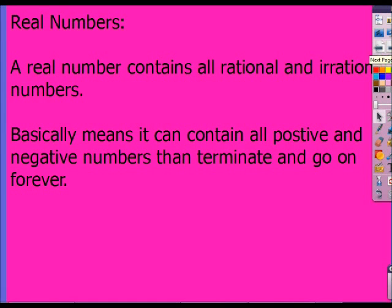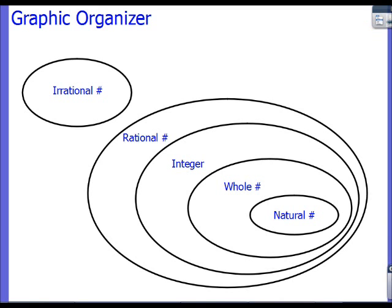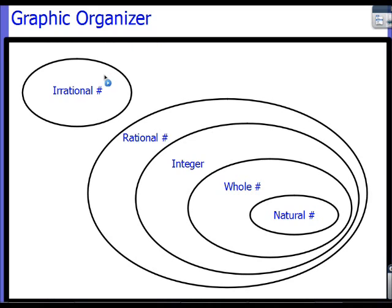And finally, our last one here is going to be a real number. And a real number contains all rational and irrational numbers. So basically, in regular terms, all that means is all positive and all negative numbers that terminate and go on forever. So that one should be pretty easy. If you ever see any number, it's everything, and so it's a real number. So every single number, no matter what it is, is a real number.